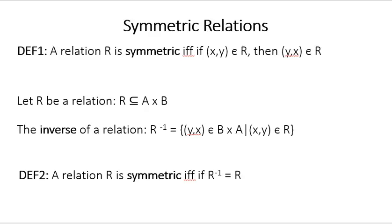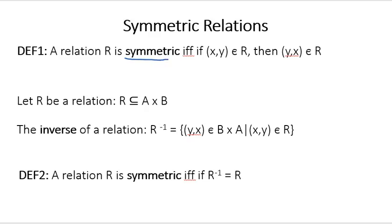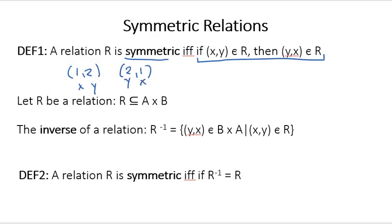Now let's talk about symmetric relations. A relation R is symmetric if and only if this conditional is true: if (x, y) is in R, then (y, x) is also in R. So in other words, if the relation contains (1, 2) and it's symmetric, it better also contain the point (2, 1).